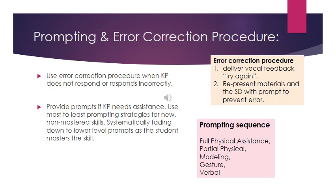When KP does not respond or responds incorrectly, we use the following error correction procedure: first, we deliver vocal feedback — 'try again' — then re-present the materials and the SD with prompts to prevent further errors. We provide prompts if KP needs assistance, using a most-to-least prompting strategy for new non-mastered skills, and systematically fading to lower-level prompts as the student masters the skill. The prompting sequence is: full physical assist, then partial physical, then modeling, then gestural, then verbal.